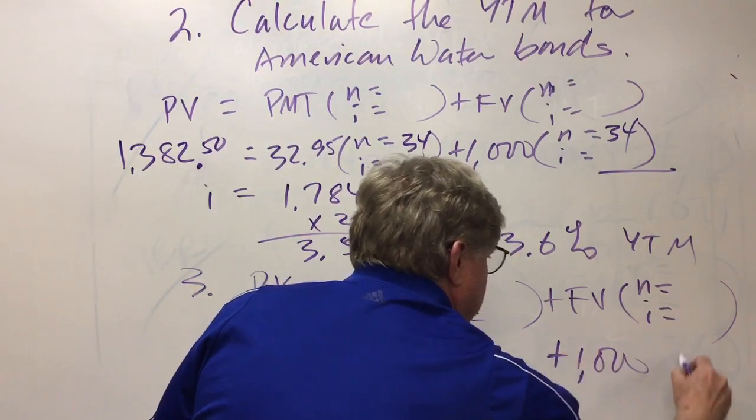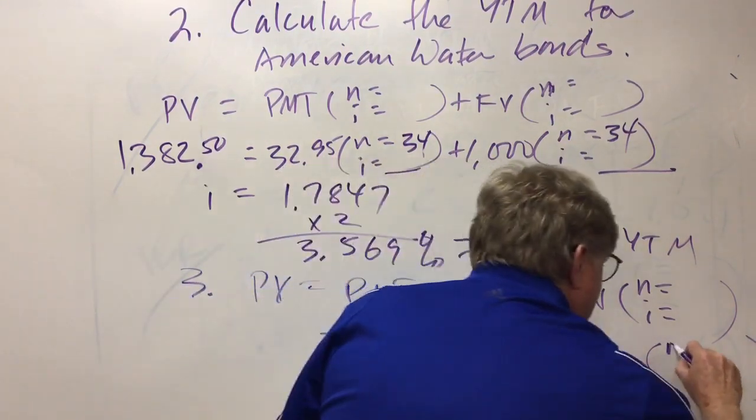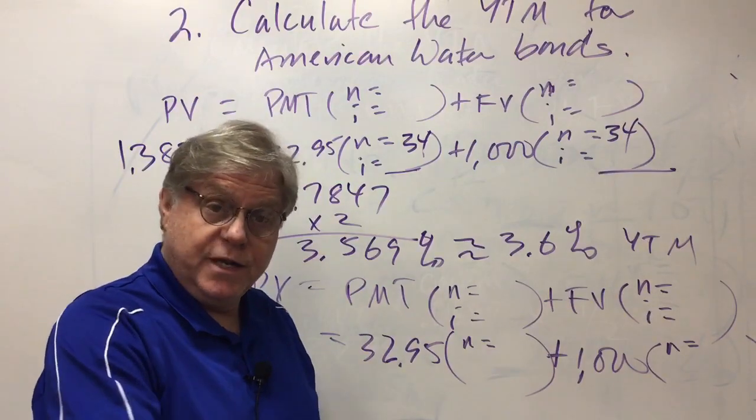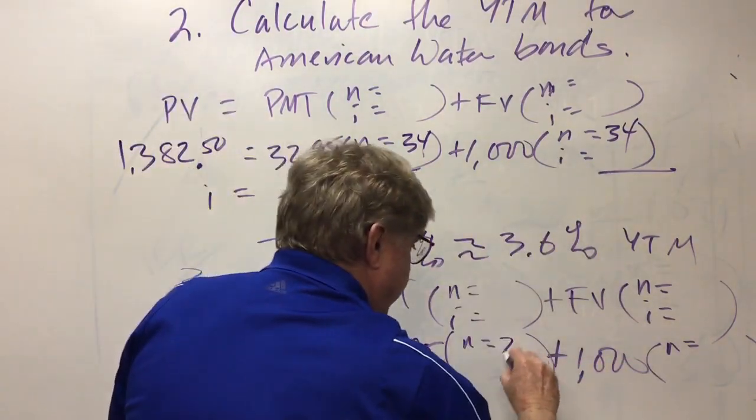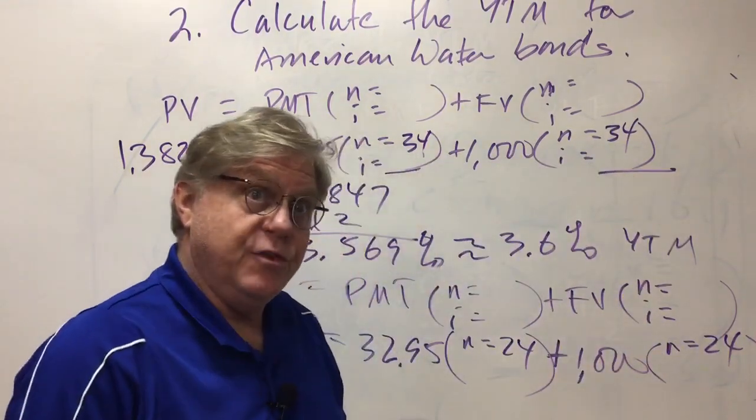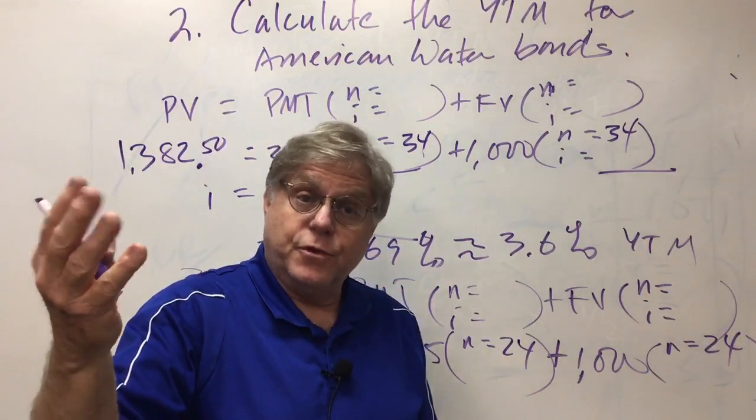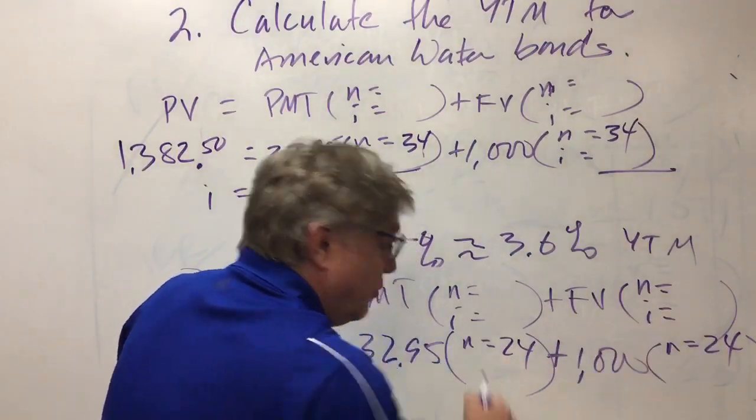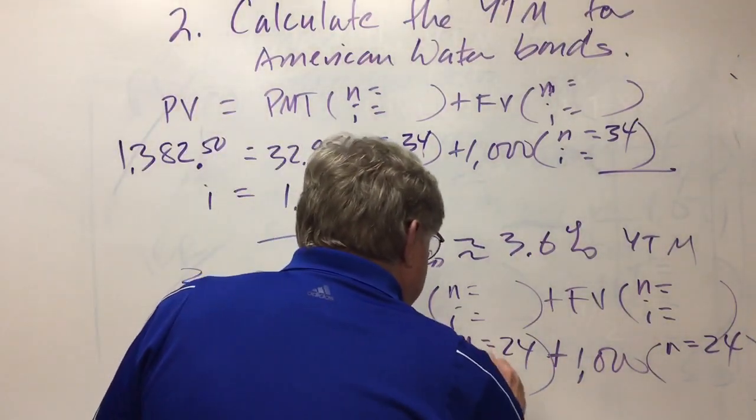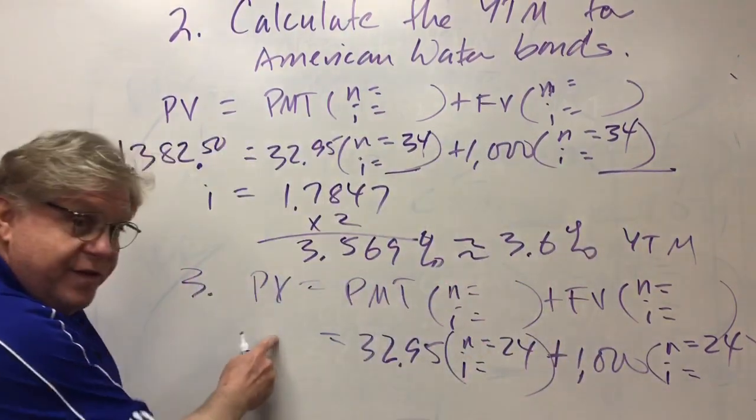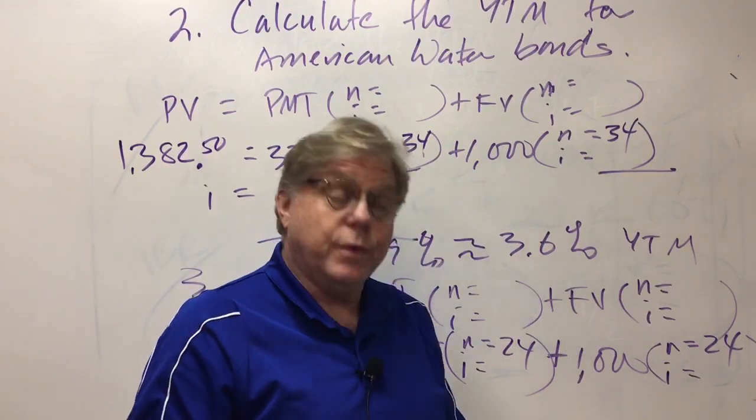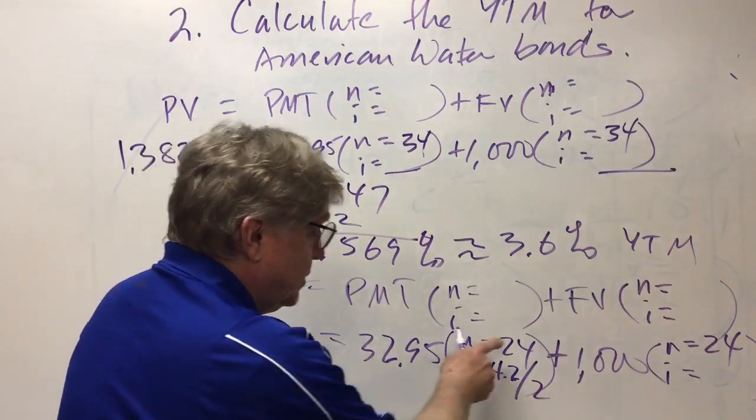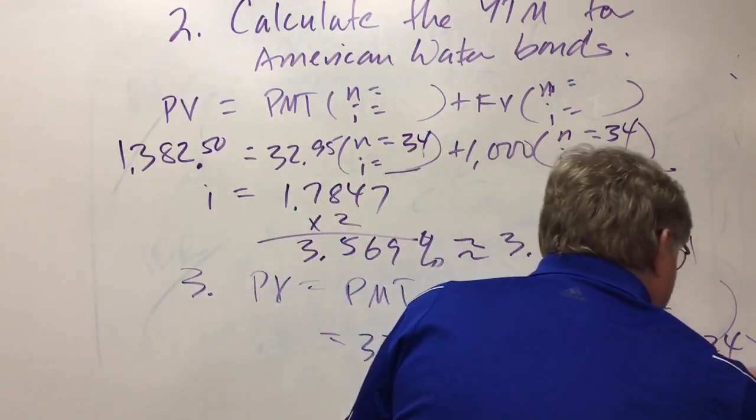We're solving for the price. This amount doesn't change. This doesn't change. N is no longer 34 because five years have passed. Five times two, ten semi-annual periods have transpired, so now instead of 34, n is 24. You can figure that out by subtracting 2025 from 2037. 2037 minus 2025 is 12 years, 24 semi-annual payments remain. And i is given in the problem here. If we're solving for the value, we must have the required rate of return, and that's what the 4.2 percent represents. 4.2 percent divided by two, keeping in mind we're dealing with semi-annual payments and semi-annual periods, so this is a semi-annual rate.